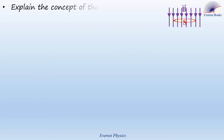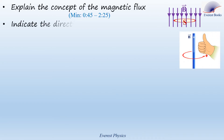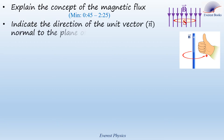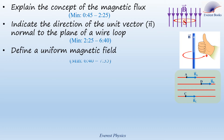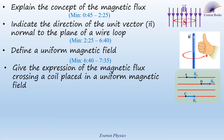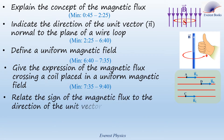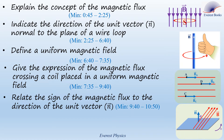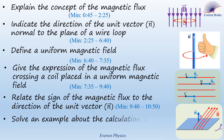In this video, we are going to explain the concept of magnetic flux, indicate the direction of the unit vector normal to the plane of a wire loop, define a uniform magnetic field, give the expression of the magnetic flux crossing a coil placed in a uniform magnetic field, relate the sign of the magnetic flux to the direction of the unit vector, and solve an example about the calculation of the magnetic flux.